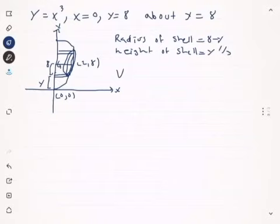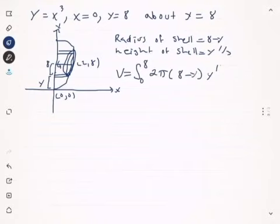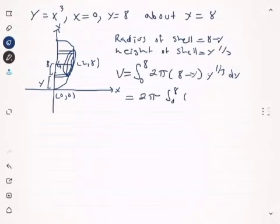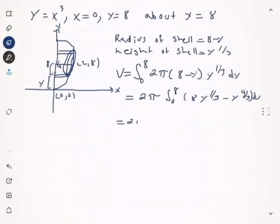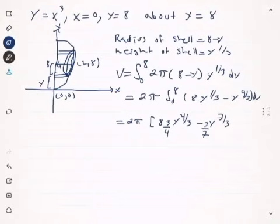The volume is the integral from zero to eight of 2π times (eight minus y) times y to the one-third, with respect to y. Multiplying out gives eight y to the one-third minus y to the four-thirds. Integrating gives 2π times [eight times y to the four-thirds times three over four, minus y to the seven-thirds times three over seven], from zero to eight. Plugging in eight gives a final answer of 576π over seven.